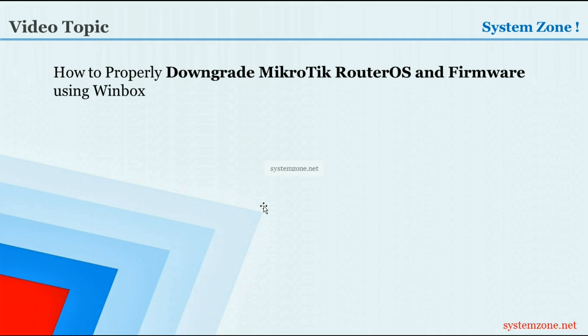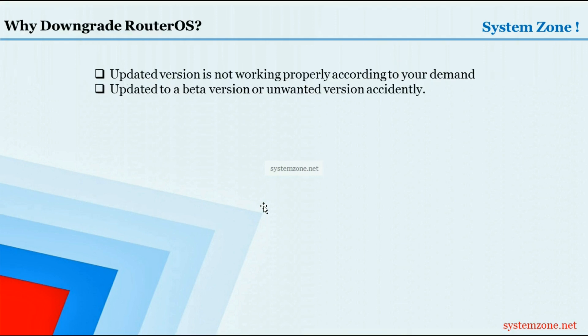Hello everyone, welcome to another System Zones video. In this video I am going to show how to properly downgrade MikroTik RouterOS firmware using Winbox. We will downgrade RouterOS because sometimes you may find that the upgraded version is not working properly according to your demand, or you may have accidentally updated it to a beta version that you don't want.